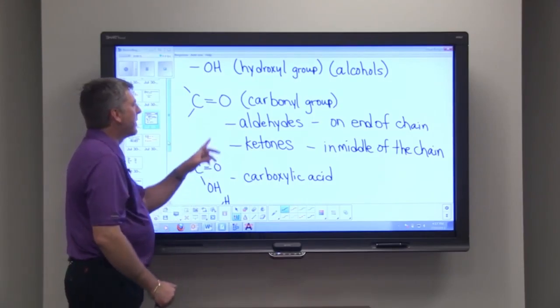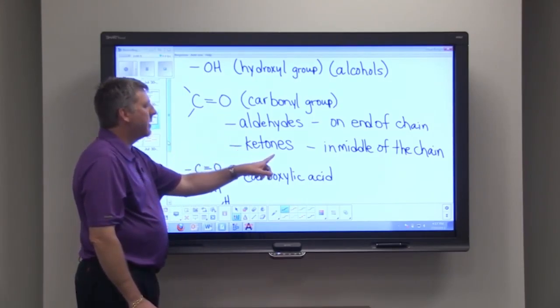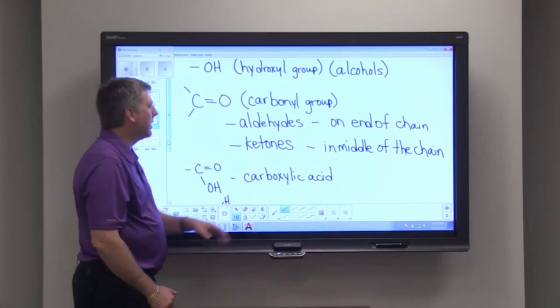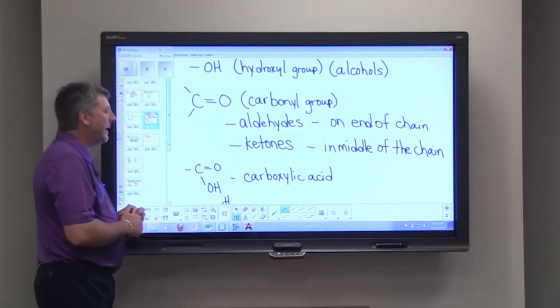If that double bonded oxygen is in the middle of the chain, or is not on the end, then that's a substance called a ketone.